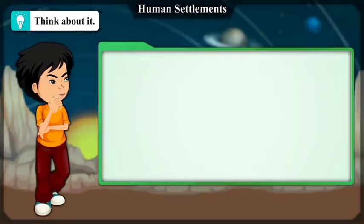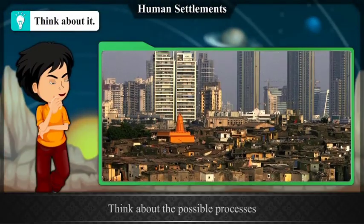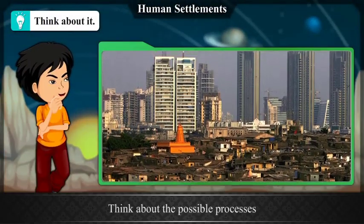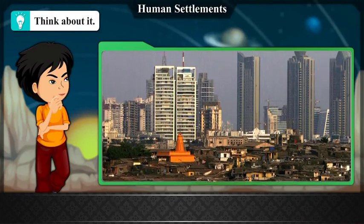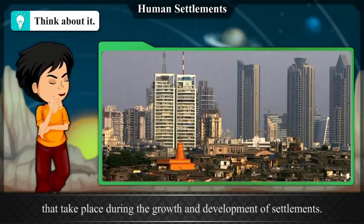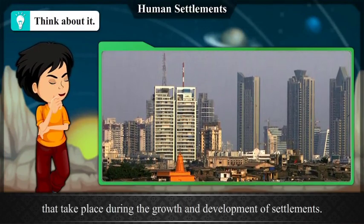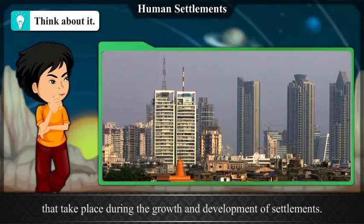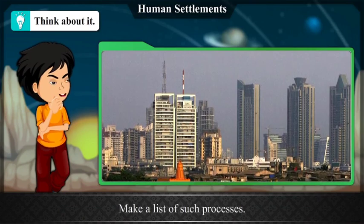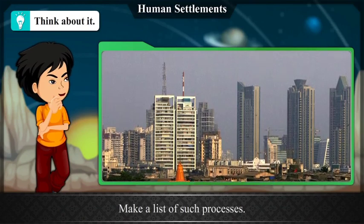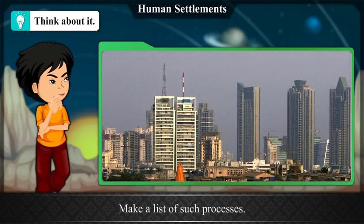Modernization, science, and technology lead to transformation in both types of settlements. Think about the possible processes that take place during the growth and development of settlements and make a list of such processes.